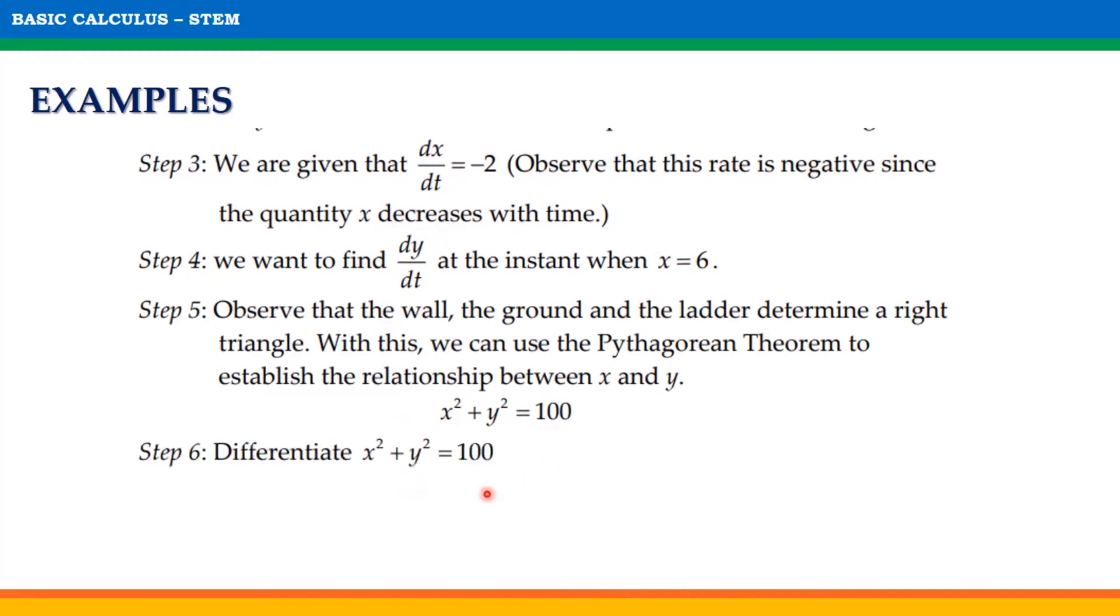Step 6: Differentiate x² + y² = 100. So, we will get 2x(dx/dt) + 2y(dy/dt) = 0.